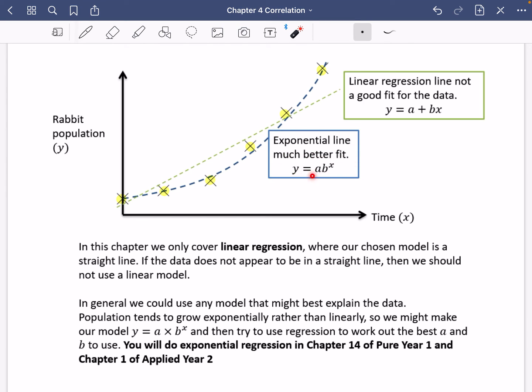So Y equals AB to the X form is going to be much better. And obviously, you've seen some exponential graphs in the news with the pandemic. Those are going to be where you would try and do an exponential model rather than a linear model. It says in general, we could use any model that might best explain the data. For example, population tends to grow exponentially rather than linearly. So we might make our model Y equals A times BX, and then try to use regression to work out the best A and the best B to use.